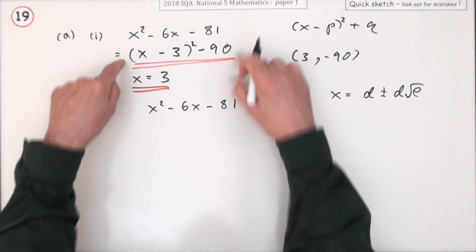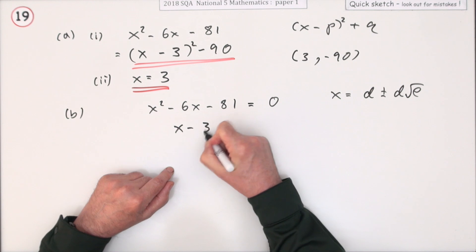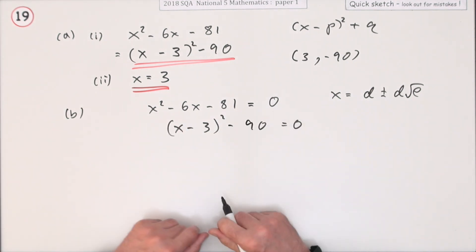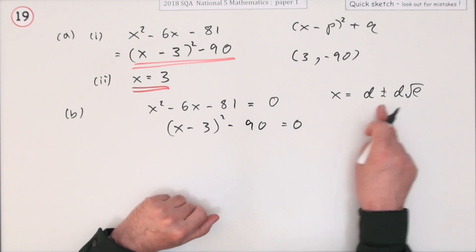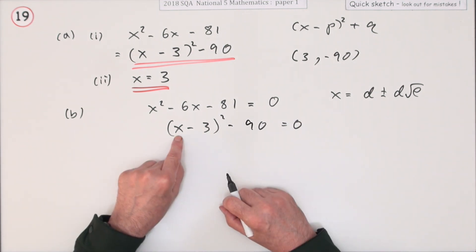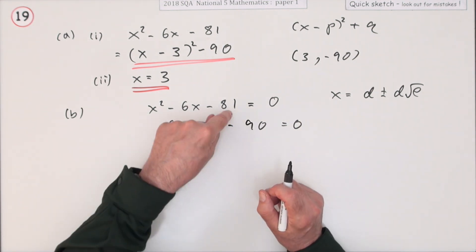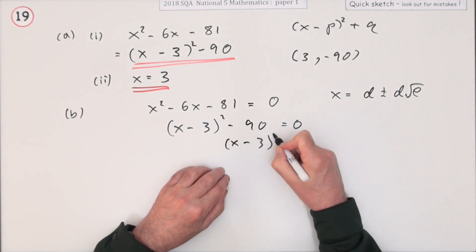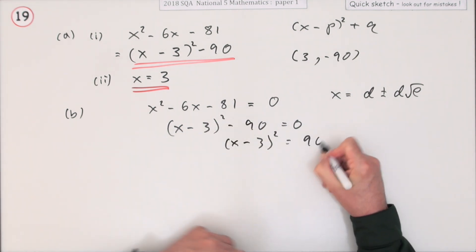Well that's exactly the same as this. So x minus 3 squared minus 90 will equal zero. And then I'm only three steps away from this answer. Because to get to x I need to get rid of that 90, rid of that square and finally rid of that 3. So let's do that.